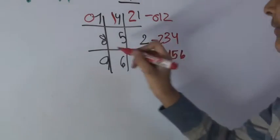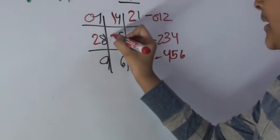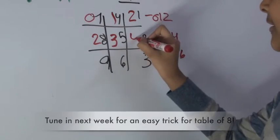On the second column, the two in front of the eight. The three in front of the five, and the four in front of the two.